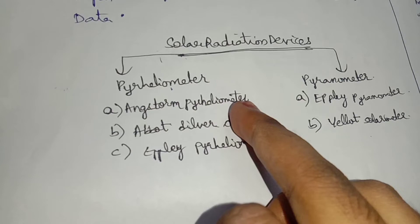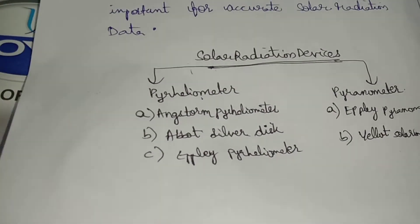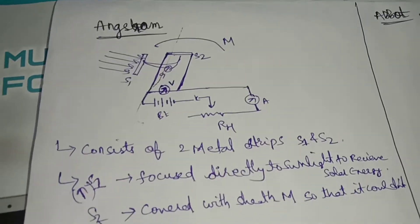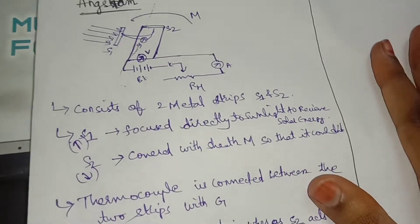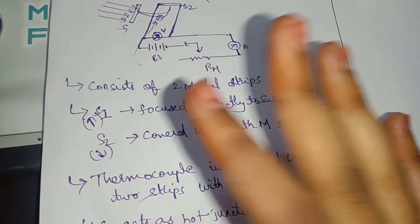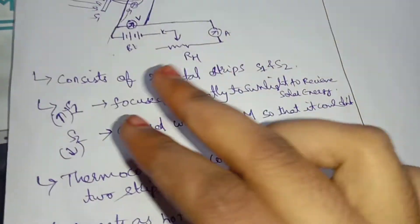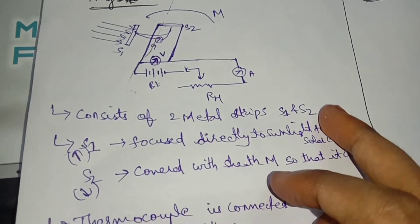I will explain the Angstrom pyroheliometer in this video. The Angstrom pyroheliometer consists of two metal strips, S1 and S2.